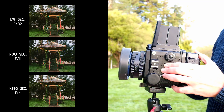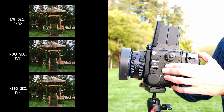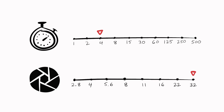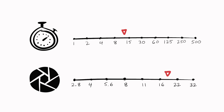And then I ran out of film. But not before I had taken these three equivalent exposures. Every time I open up the aperture one stop, I'm doubling the amount of light that's coming in the camera. So I need to compensate by cutting in half the amount of time that the shutter is open. And I can just keep doing this over and over and over.